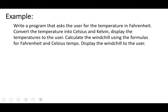We're going to write a program that asks the user for the temperature in Fahrenheit, and then convert it to Celsius and Kelvin. The equation for Celsius is: temperature Celsius equals temperature Fahrenheit minus 32, divided by 1.8. Then temperature Kelvin equals temperature Celsius plus 273.